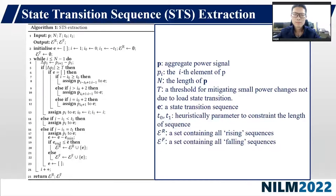Second, Methodology. The proposed STS extraction algorithm is presented in Algorithm 1. In line 1, given an aggregate power signal P of length n, T0 and T1 are heuristic parameters to constrain the sequence length, with a threshold T for mitigating small power changes not due to load-state transitions. After initialization in line 2, each power variation symbol with delta P_i greater than T and its previous neighbors are assigned to a sequence E based on adaptive rules in lines 5 to 13. Standardization is carried out on E by subtracting its minimum entry from each entry therein.